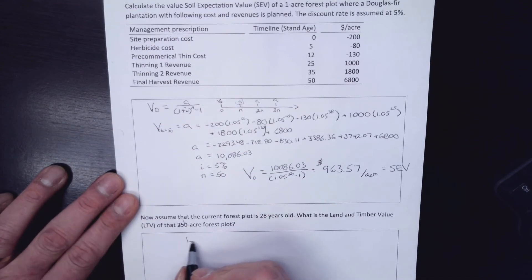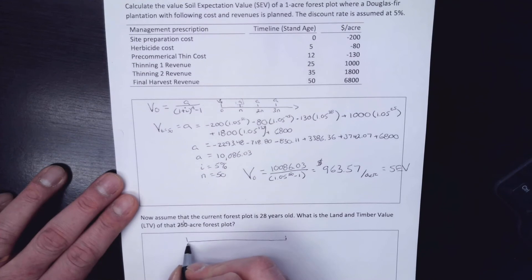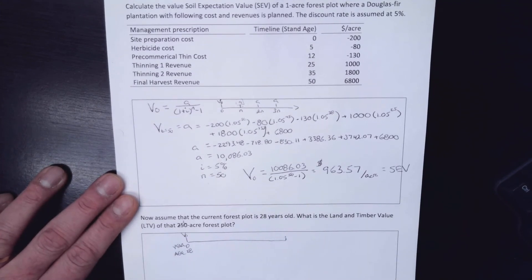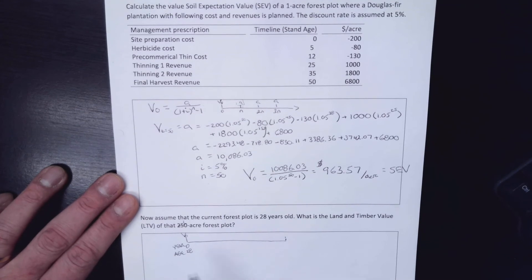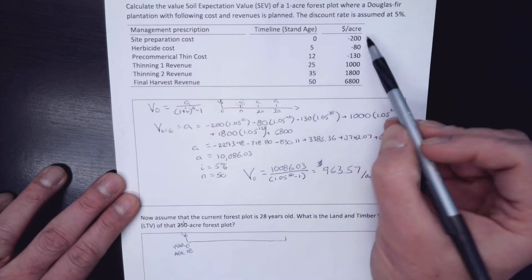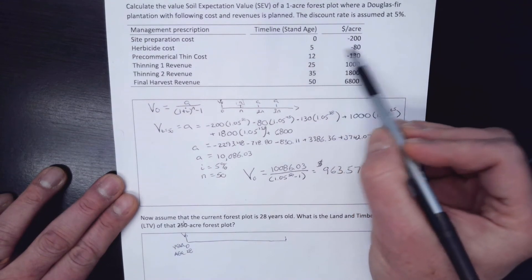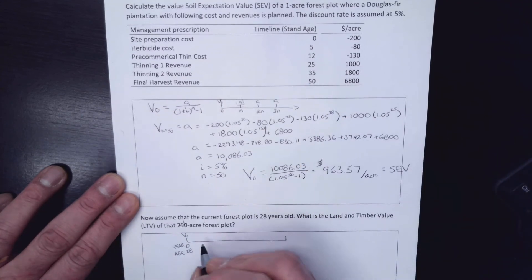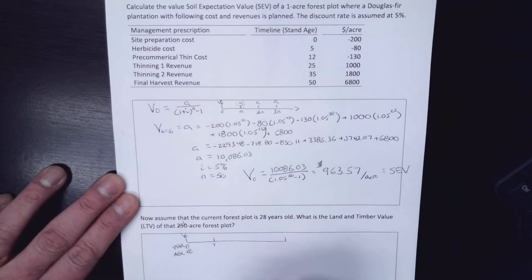And so what I need to do is a timeline again. And so here I am out here at year zero. And the age of the stand is 28. And I want to know what's the V₀. So that's going to be my land and timber value. So what's the next thing that happens in this stand? If I have 28-year-old trees, none of this stuff, that already happened in this rotation. So the next thing is at age 35, I'm going to do this second thinning. And so let's put that in here. That's seven years out into the future. And that's age 35 for the stand. I'm going to get $1,800.